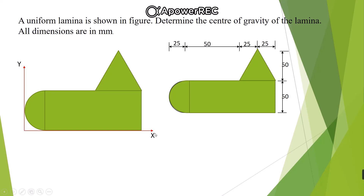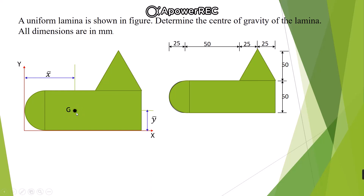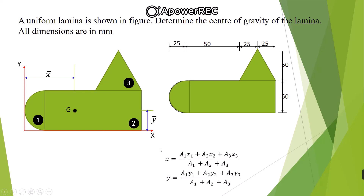The Y-axis is the first reference axis, passing through the left end of the figure, and the X-axis is the second reference axis passing through the base. Let capital G be the centroid of the composite section at a distance of x-bar from the Y-axis and y-bar from the X-axis. We divide the composite section into three simple figures and use: x-bar = (a1·x1 + a2·x2 + a3·x3) / (a1 + a2 + a3) and y-bar = (a1·y1 + a2·y2 + a3·y3) / (a1 + a2 + a3).